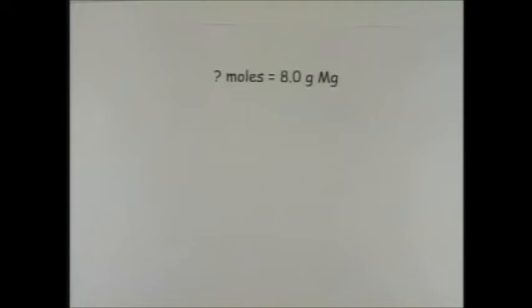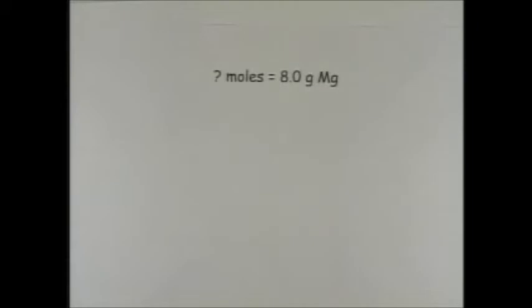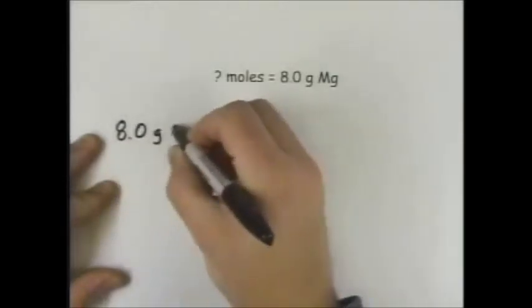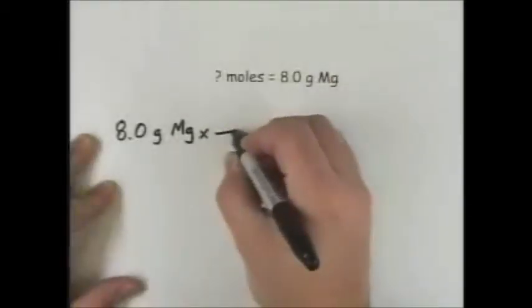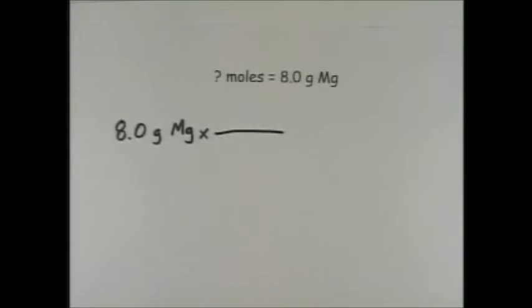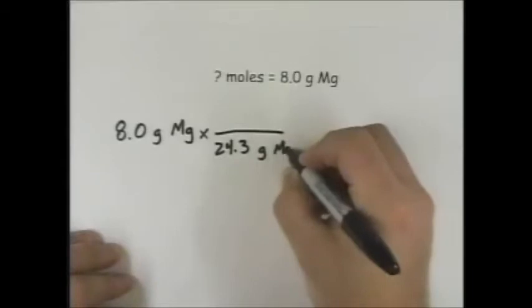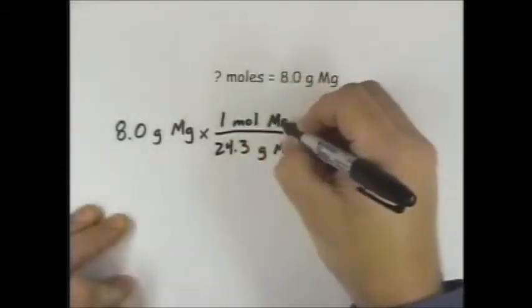Now we need a conversion fact. Think about what we know. We know that there are 24.3 grams of magnesium in every mole of magnesium. So that will be our conversion factor. Working the problem, we start with 8.0 grams of magnesium and we let the units of the conversion factor guide us. So we put 24.3 grams of magnesium on the bottom and 1 mole of magnesium on the top.